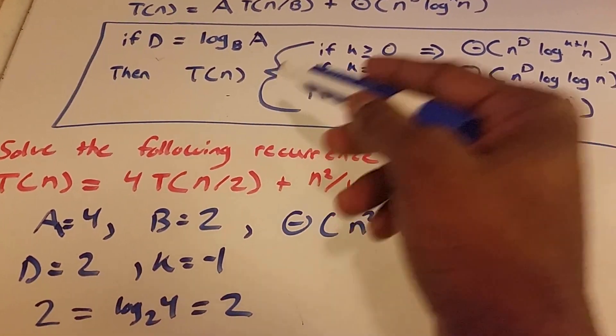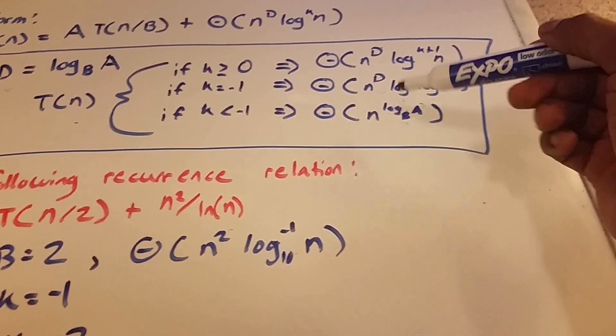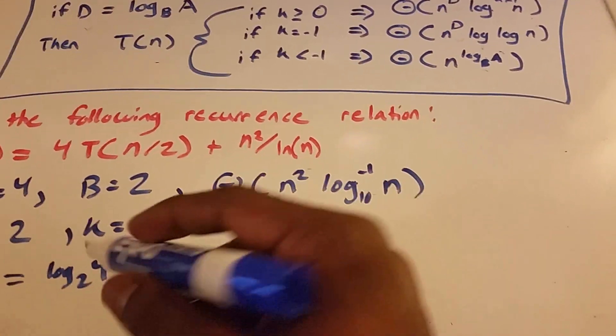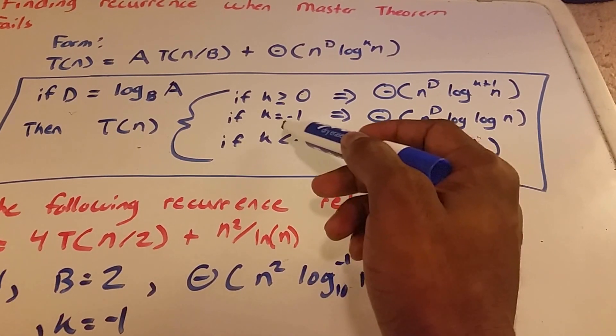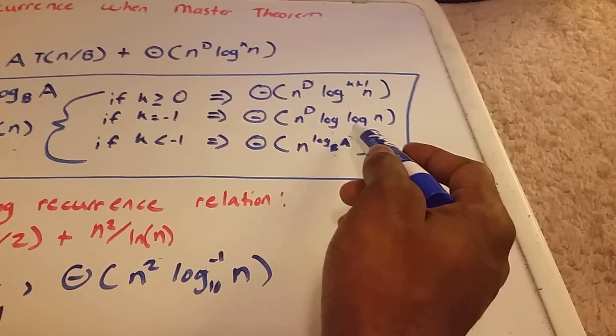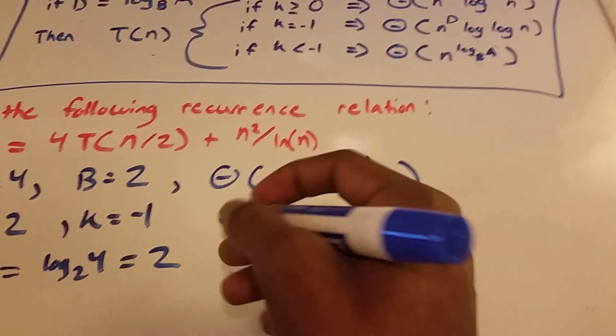So then our T(n) is equal to one of these three cases. So now our k value is negative 1. So we look at the case where k is negative 1, and here we have our answer.